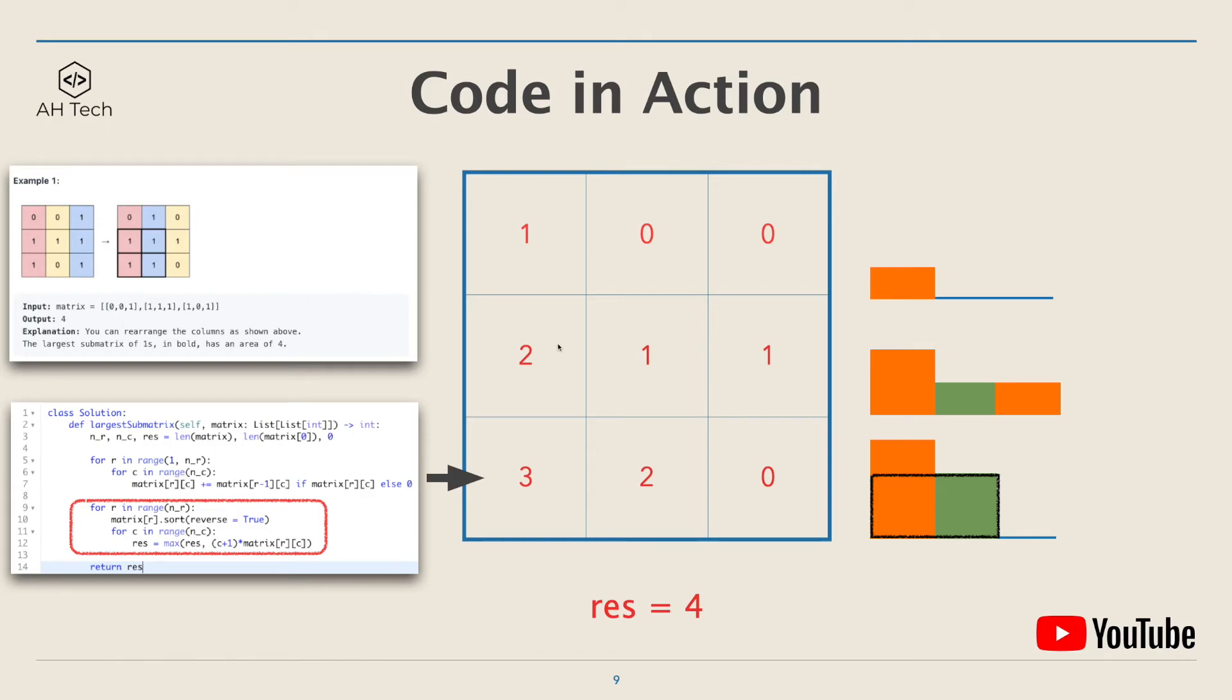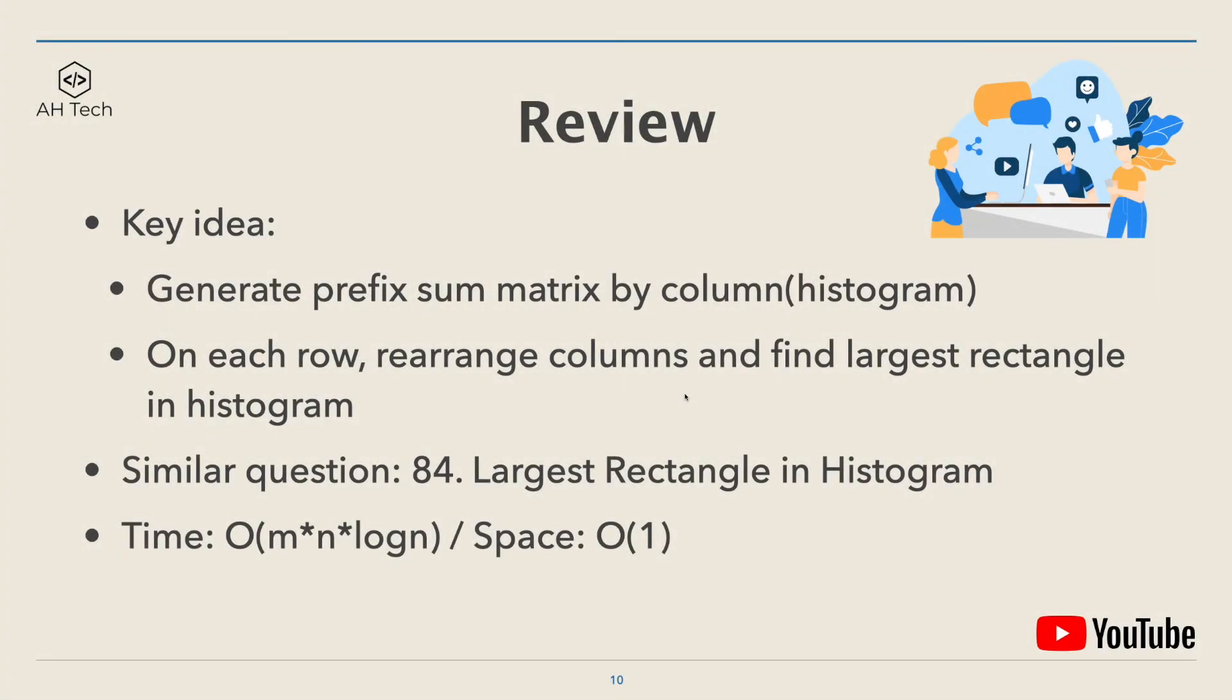And this will conclude the algorithm. Finally, let's review. So the key idea to solve this question first is to generate a prefix sum matrix. And the prefix sum is on the column direction. And you can think of this as histogram of this matrix. And then on each row, we will try to rearrange the columns to find the largest rectangle in histogram, which is similar to question 84.